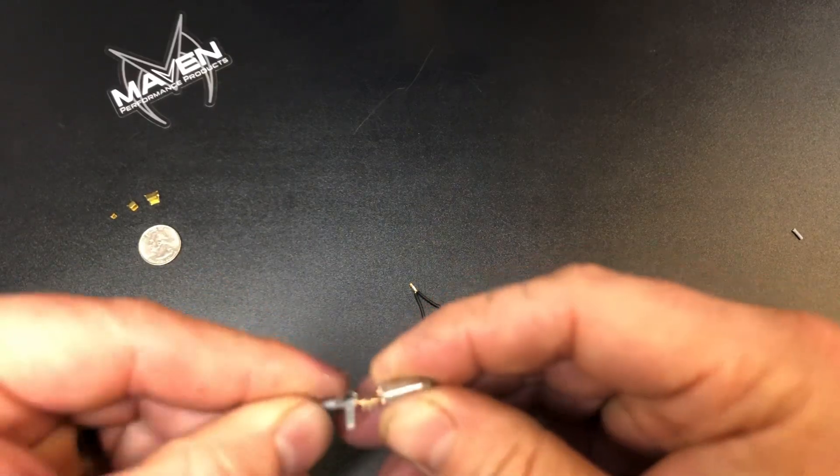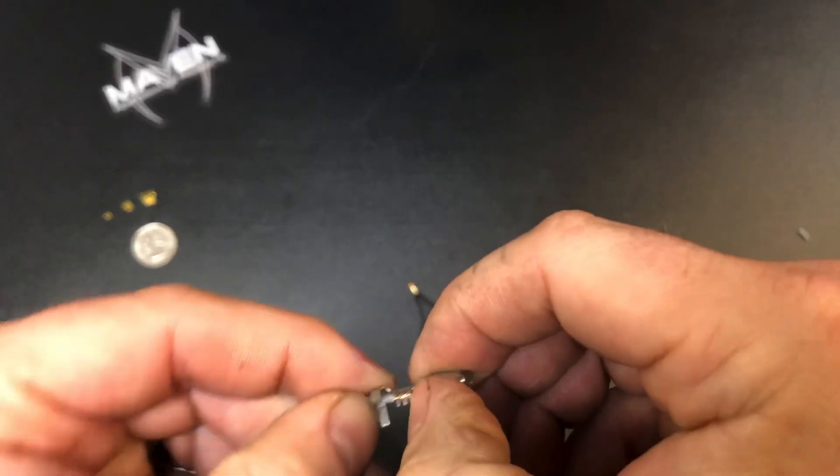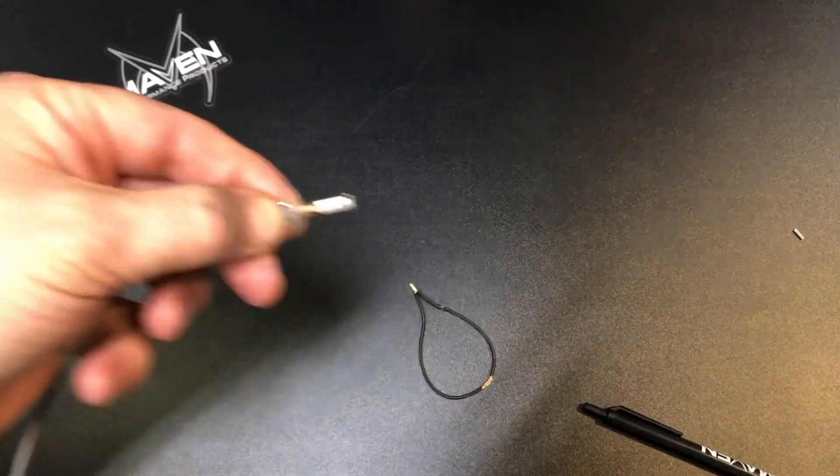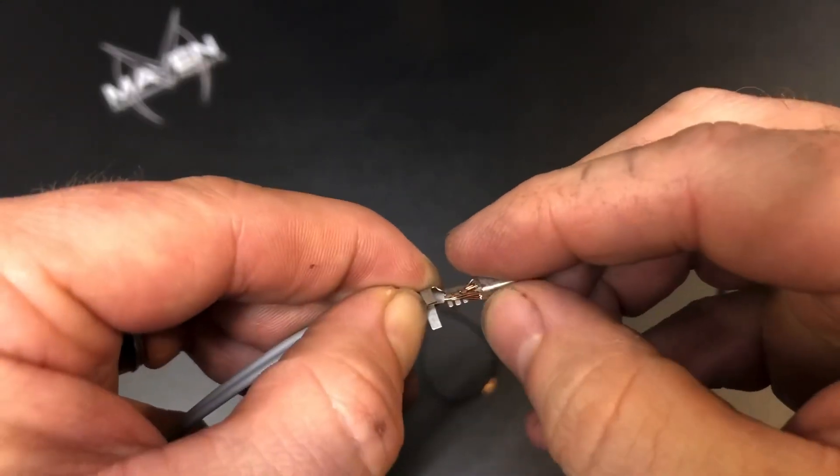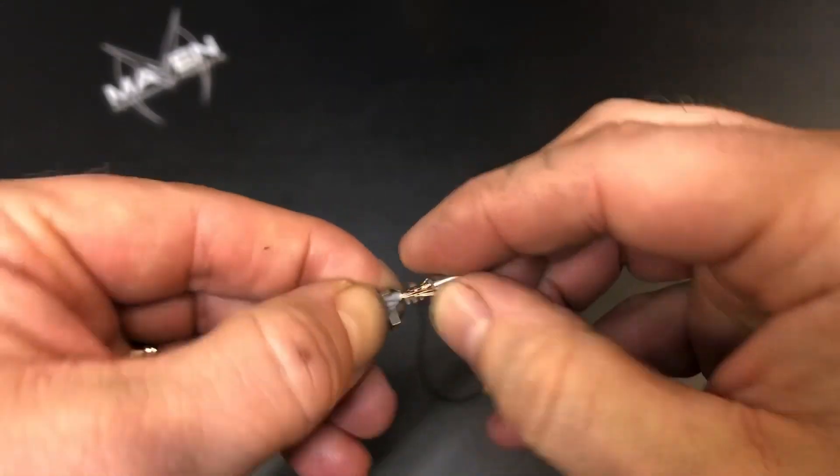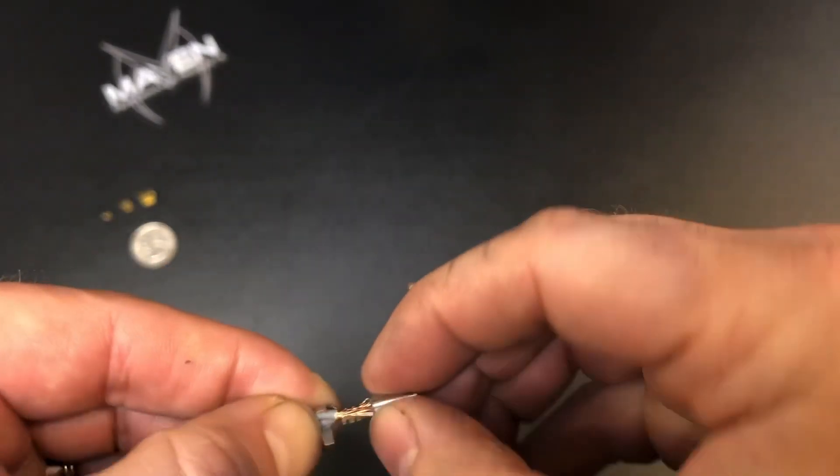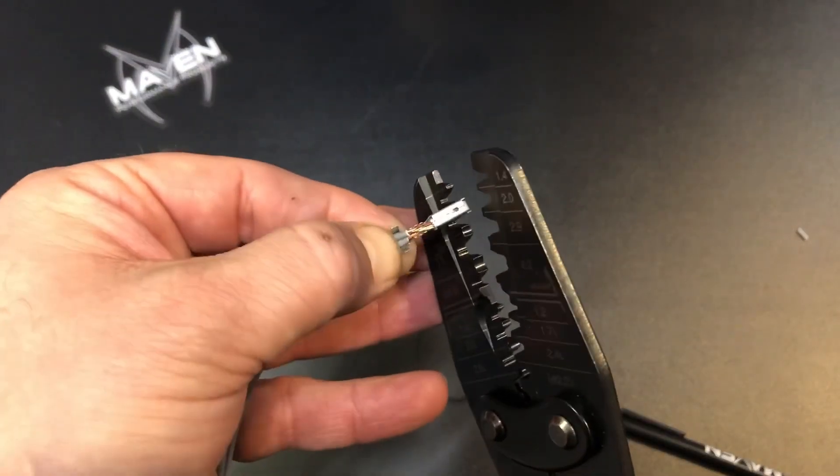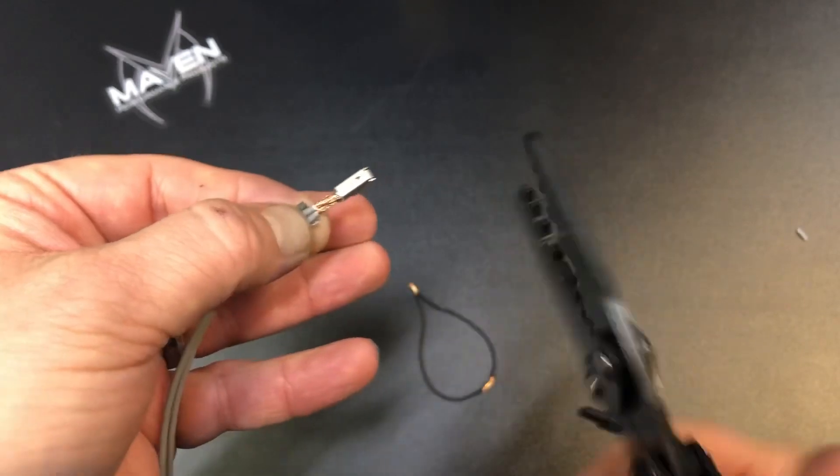I put it in here, make sure that the wires are all the way through the area that needs to be crimped and laying in there. Then I'll go ahead and come over here and actually flip that and give it a good crimp.